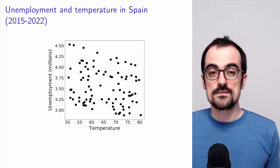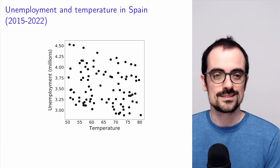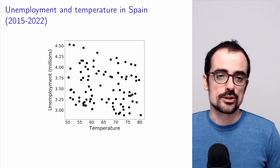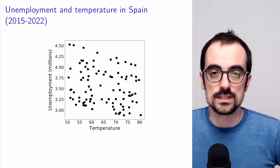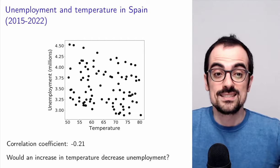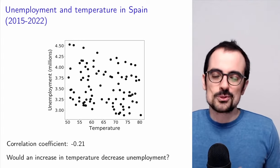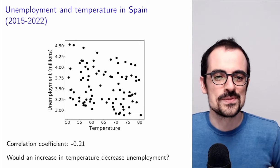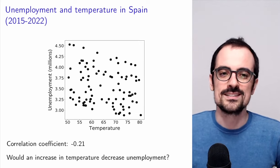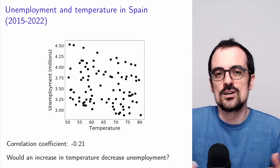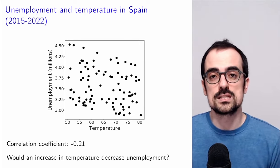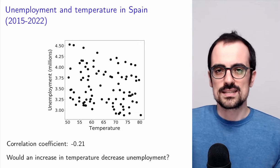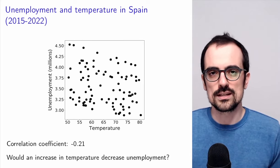Finally, we arrive at one of the most important topics: the relationship between correlation and causal inference. Here is a scatter plot of unemployment and temperature in Spain between 2015 and 2022 — there is a negative correlation. Does that mean that increasing temperature will decrease unemployment? Of course, that makes absolutely no sense. If we increase the temperature in Spain by 2 degrees, unemployment would not decrease because of that. This illustrates the difficulties in interpreting correlation in terms of causal effects.